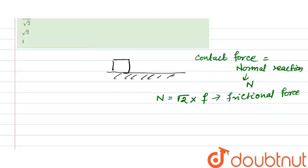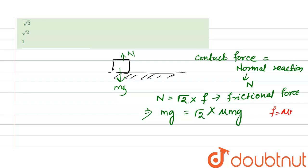Now, N is equal to mg, because if the block is moving on a rough horizontal surface, there is a downward force mg and the normal reaction acting upward. So we can write mg is equal to root 2 into f. The frictional force f is equal to mu times mg — this is the formula for frictional force.